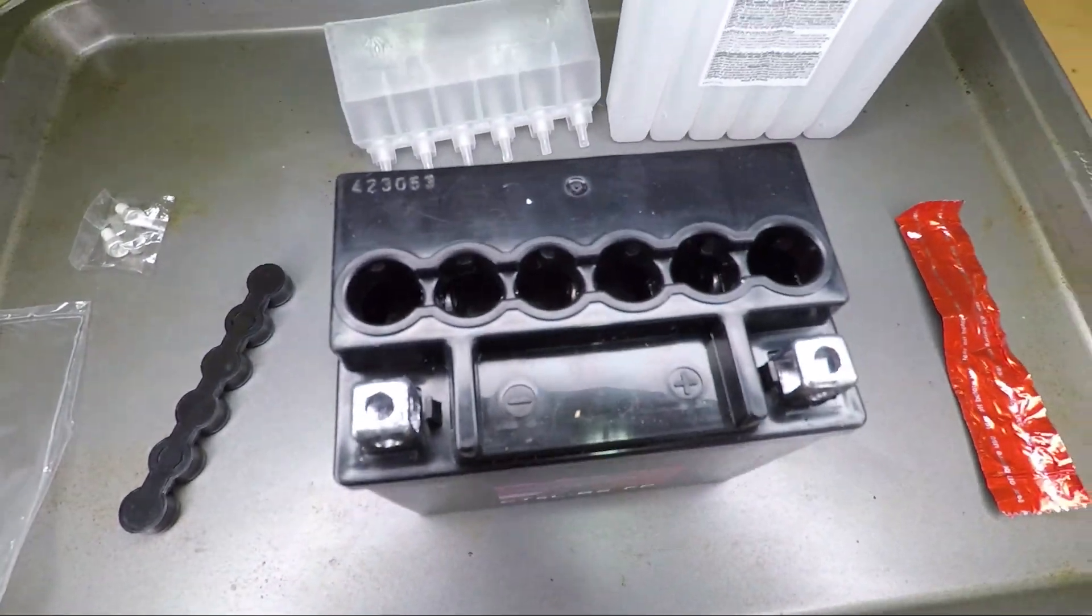This is an AGM battery. That means absorbed glass mat. The acid is soaking into basically a cloth material inside the battery now. At this point, I need to give the battery one hour for the sulfuric acid to absorb into the cells. This should be done in a well ventilated area, so I'm going to open the window.